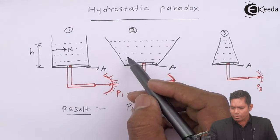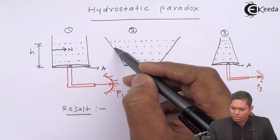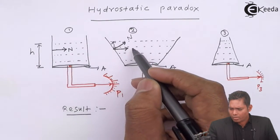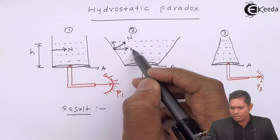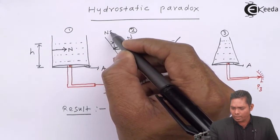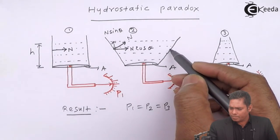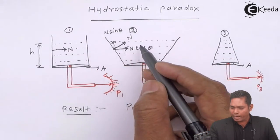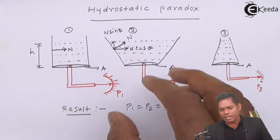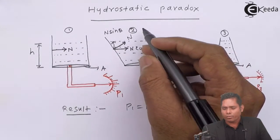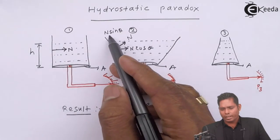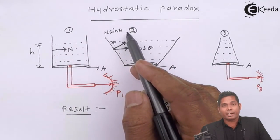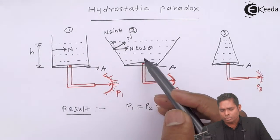In the case of vessel two, the wall is inclined outward, so the normal force on the liquid is directed inward and upward. If I resolve this into two components — horizontal and vertical — suppose the angle is theta, then the vertical component is n·sinθ and the horizontal component is n·cosθ. From both sides, the horizontal components cancel out, and the vertical components add up. So the net result is that the liquid experiences an upward force of n·sinθ in addition to gravity.